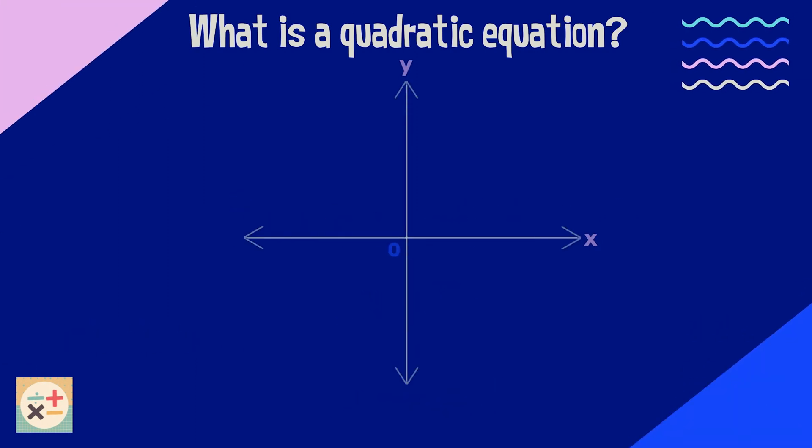If we plot a quadratic equation on a graph, it may look something like this. Can you see there are two points where the line crosses the x-axis? These are the two solutions.